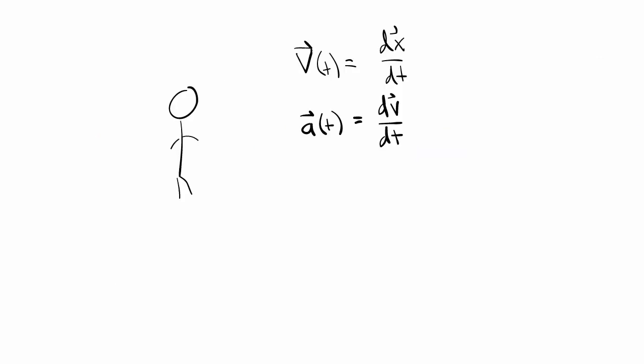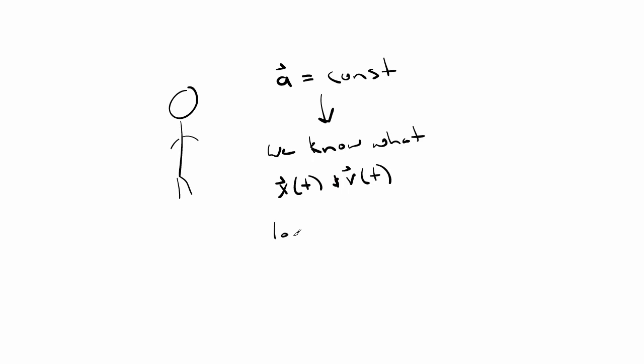Remember how our basic equations that describe motion require that you know the functional form of either the displacement, velocity, or acceleration as it depends on time to determine the other two quantities? Well if we know that our acceleration is constant, then we already know the functional form of the acceleration. It doesn't depend on time.